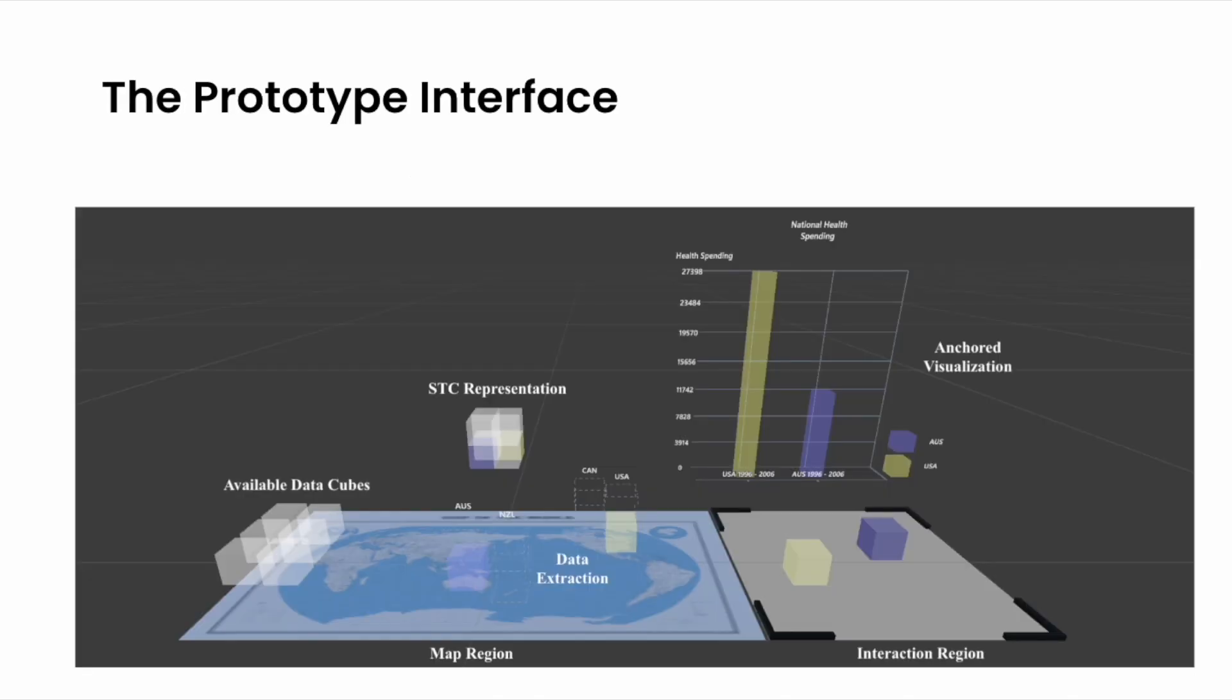Here is what the prototype interface looks like. It is divided into four functional components: tangible cubes serving as embodied data carriers, a map region providing spatial context, an interaction area for manipulating tangible cubes, and visualizations that adapt based on user interactions.